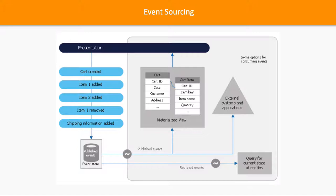In the traditional event driven architecture we don't have a track of events which are getting executed by consumers. You keep raising the events and the consumers are processing them. We are not maintaining the state of a particular event — we don't have the whole system state. The events are coming and getting executed, and at any point of time if you try to get the state, we don't know what all events have been processed or what all event states have been executed to achieve a particular state.